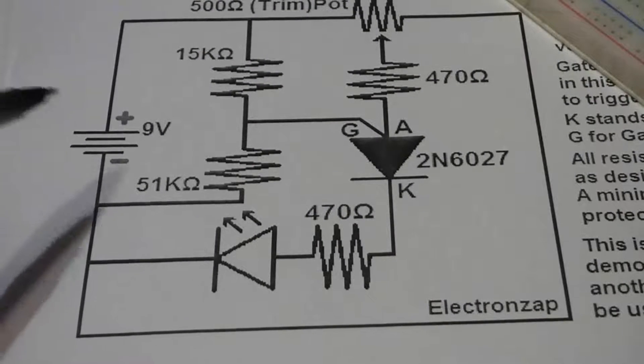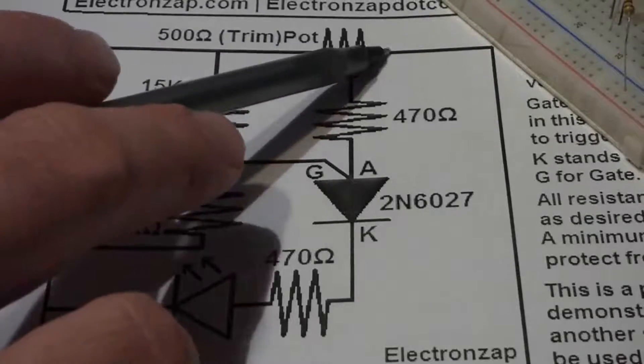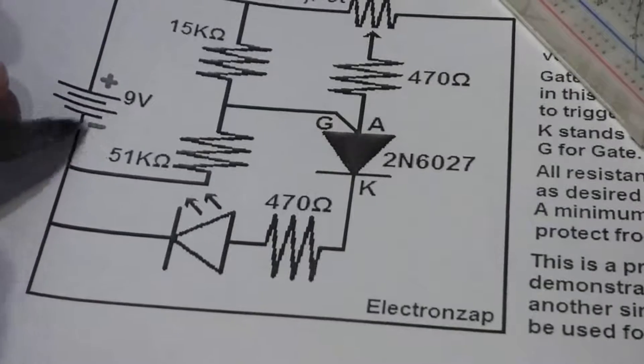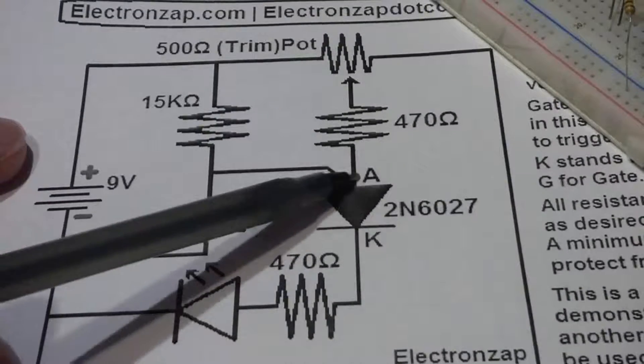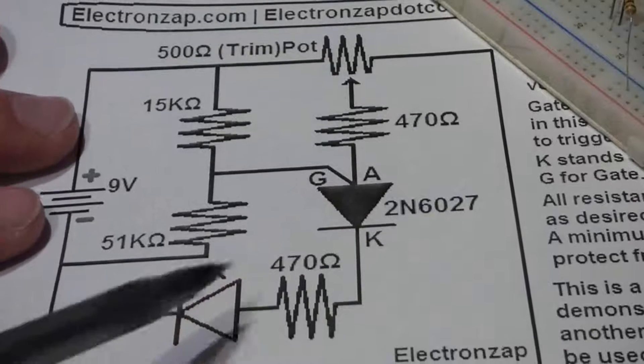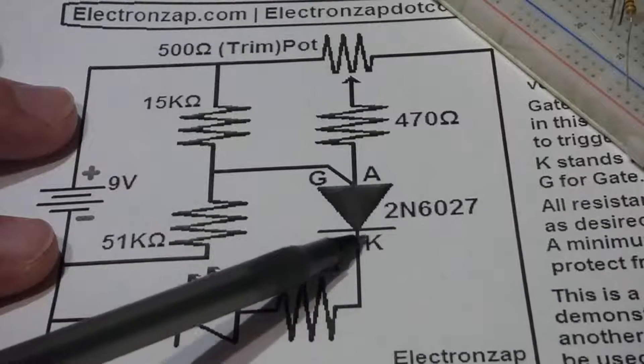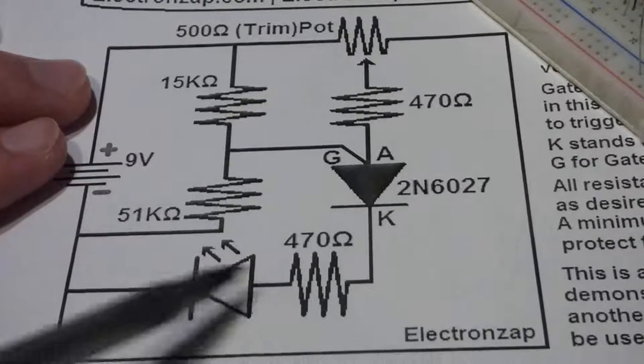So here you can see the trim pot comes from the positive side, and then the other side of the trim pot comes around to the negative side of the power source. So that's how we will set our other voltage. And now on the cathode side, we're going to have our output, so we got a protective resistor here and an LED going back to ground.